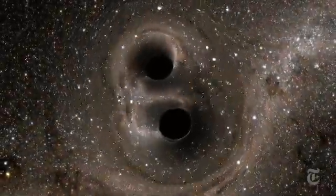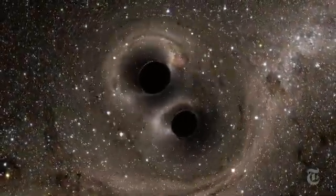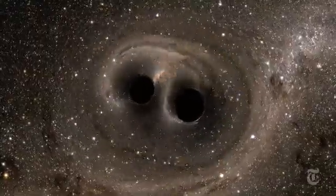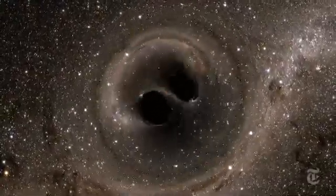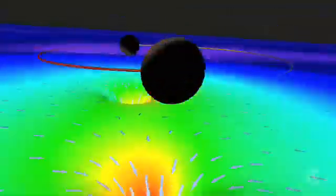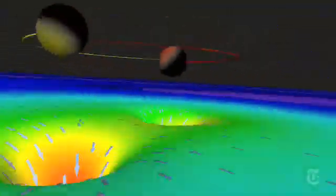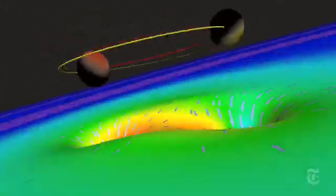A billion years ago, in a distant galaxy, a pair of black holes circled each other. They spiraled inward and finally merged. The collision unleashed the energy of a billion trillion suns in a fraction of a second.